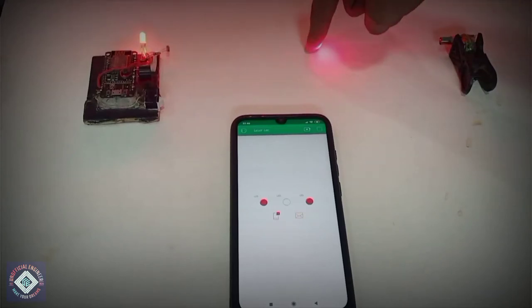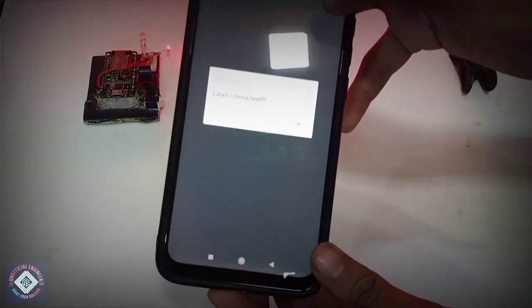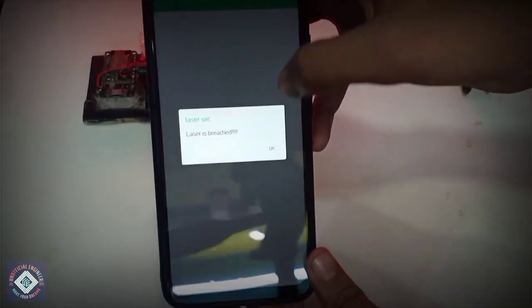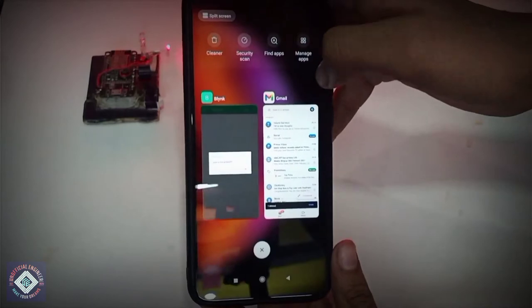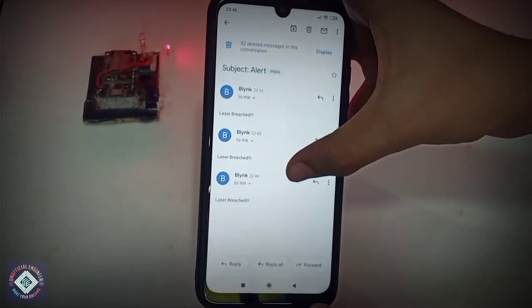Anything which comes between the lasers will trigger an instant notification. You can see we got the location in our Blink application showing laser is breached, and we also got an email alert saying laser breached.